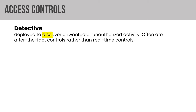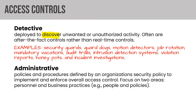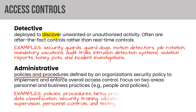Detective controls are intended to discover unwanted activity in progress — examples include security guards, guard dogs, motion detectors, and audit trails. Administrative access controls are the paperwork types: policies and procedures, hiring practices, background checks, security training, vacation history, supervisors, and personnel controls — lots of people and policy here.